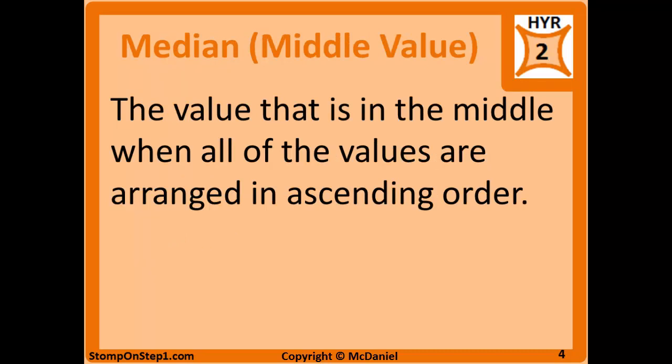The next measure of central tendency is median, which can just be thought of as the middle value. The median is the value that is in the middle when you arrange all the values in ascending order, and the median is in between the two others with regard to how robust it is.